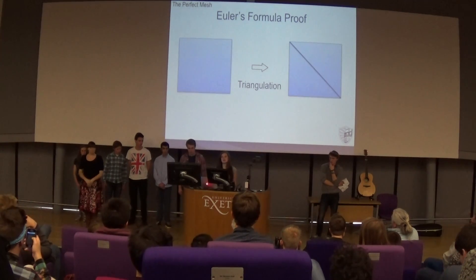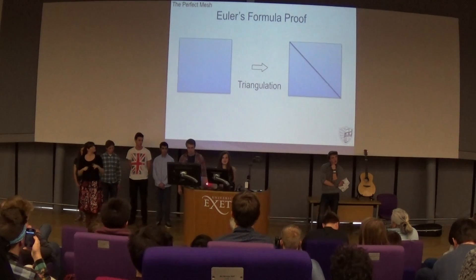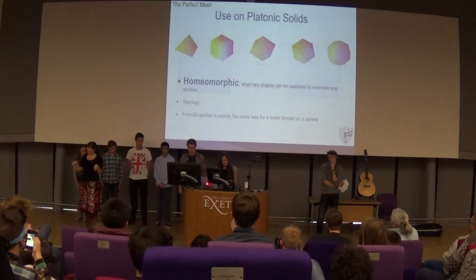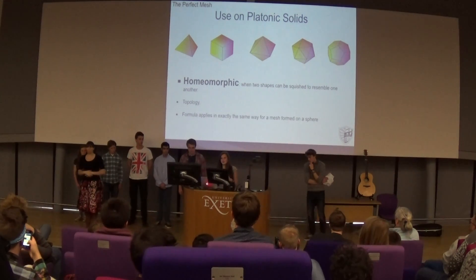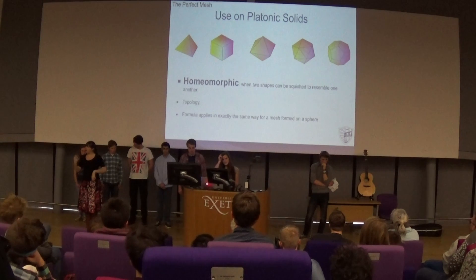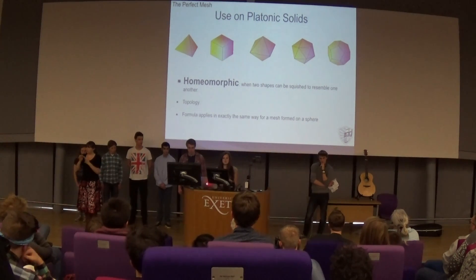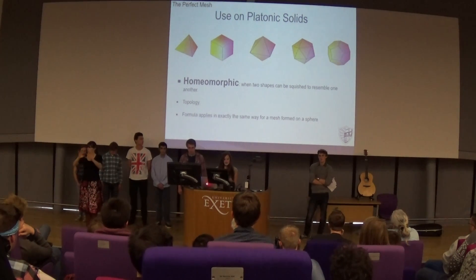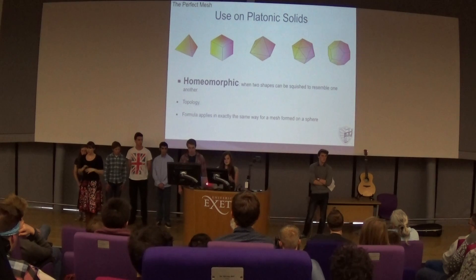Triangulation is essentially breaking a shape down into the triangles it's made up of. Euler proved that his formula is true for any 3D shape, which means it includes the Platonic solids. And if it's true for the Platonic solids, it must be true for any subdivision of them into a higher resolution mesh. Because of topology, what applies to the meshes in their Platonic solid form can apply to the meshes on the sphere as well.